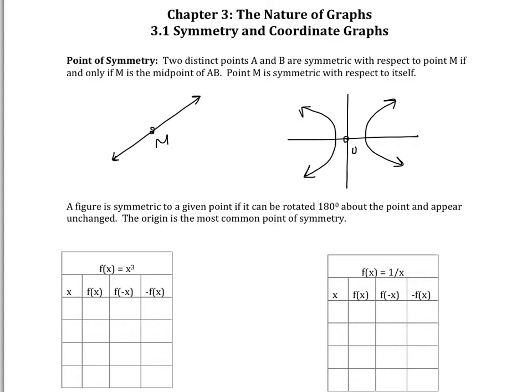When we talk about symmetry, we want to think about things being folded onto themselves and matching up perfectly. On a line, if I have two points A and B, and I fold one half of the line onto the other half — where the crease would be at point M — then A and B should match up perfectly, meaning M is the midpoint of AB.